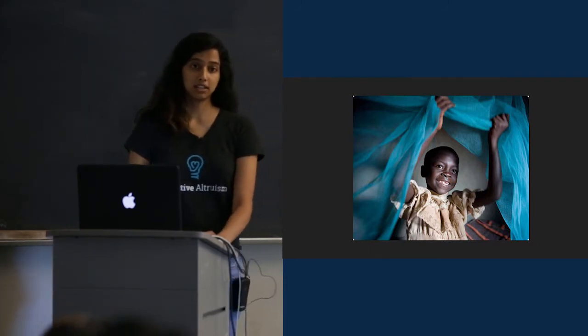On the other hand, it costs about $10 to produce and distribute a malaria net. Each net protects two people, usually children under the age of five, from getting malaria for three years.